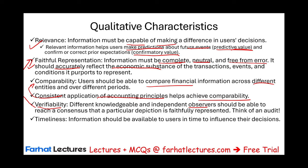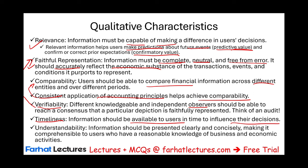Also, when you provide information, it has to be provided on a timely basis. Timeliness means information should be available to users in time to influence their decisions. For example, publicly traded companies issue their financial statements on a quarterly basis. The information you provide also has to be understandable. It should be presented clearly and concisely, making it understandable to users who have reasonable knowledge of business and economic activities. It cannot be too complicated — you have to give them information that is easy to understand and follow. Those are the qualitative characteristics.